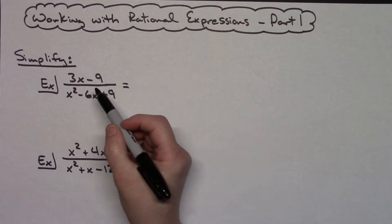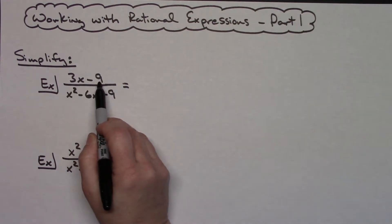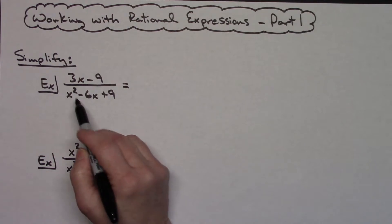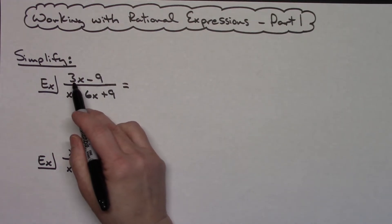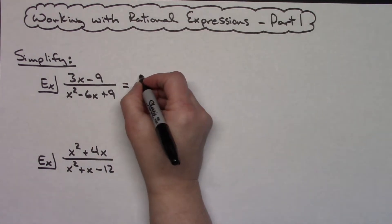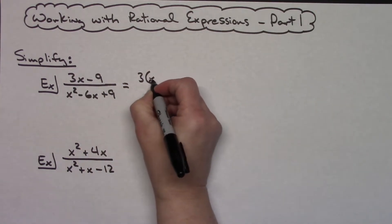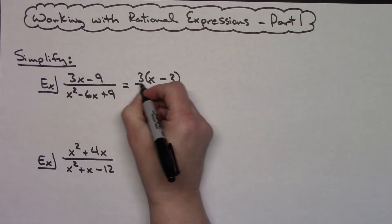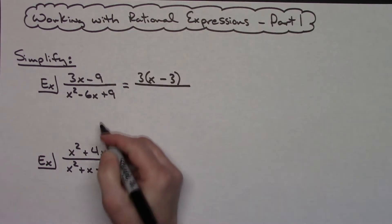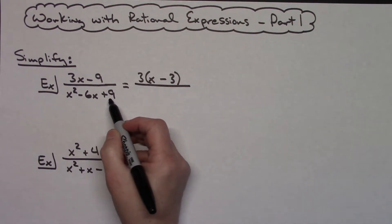In this numerator I've got 3x minus 9 — two terms — so I'm going to automatically look for a greatest common factor. I can take a 3 out of both terms, so if I factor out a 3, the first term leaves me with an x and then a minus 3, giving me 3(x − 3).